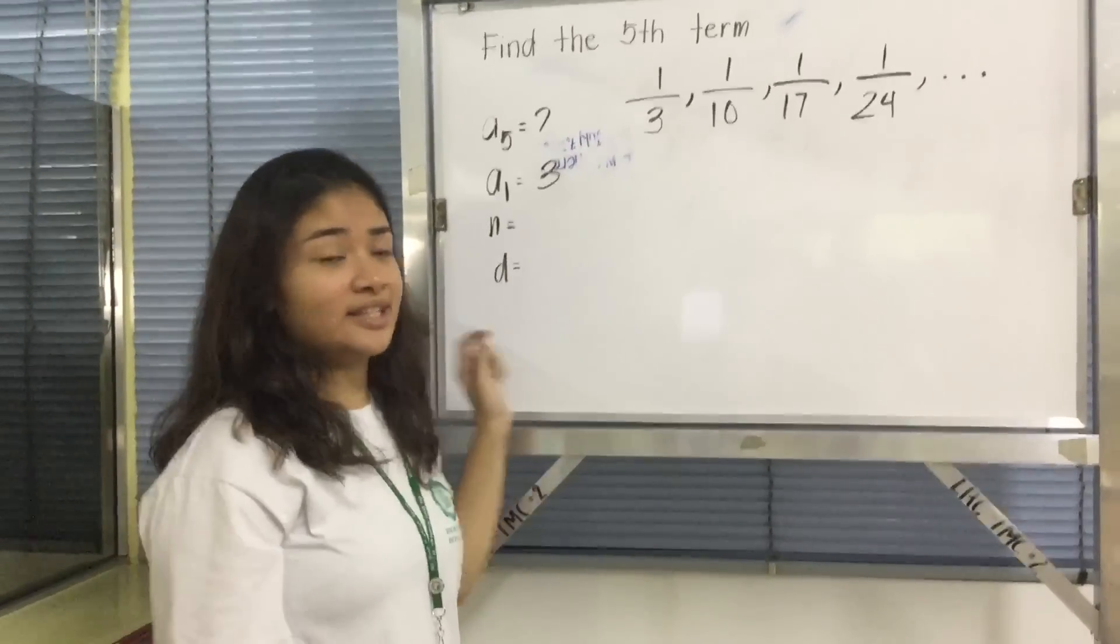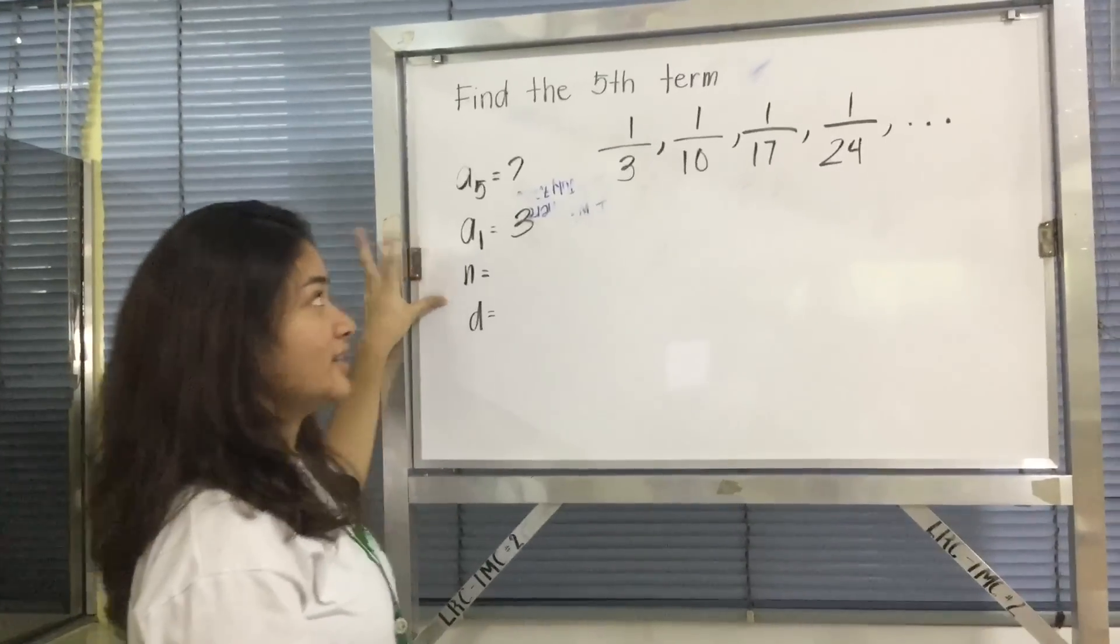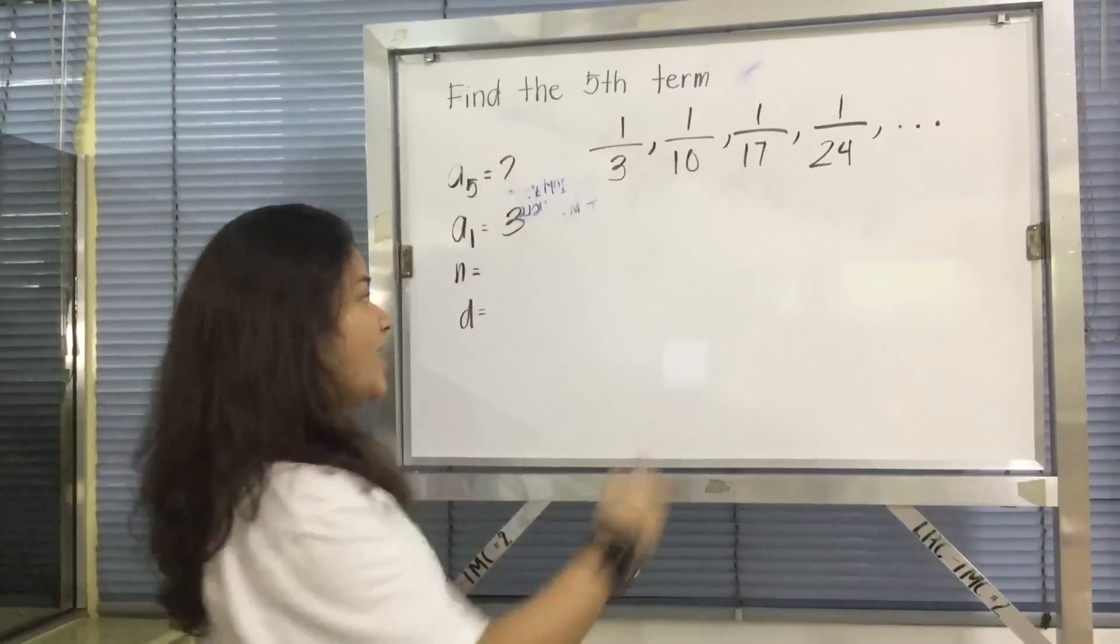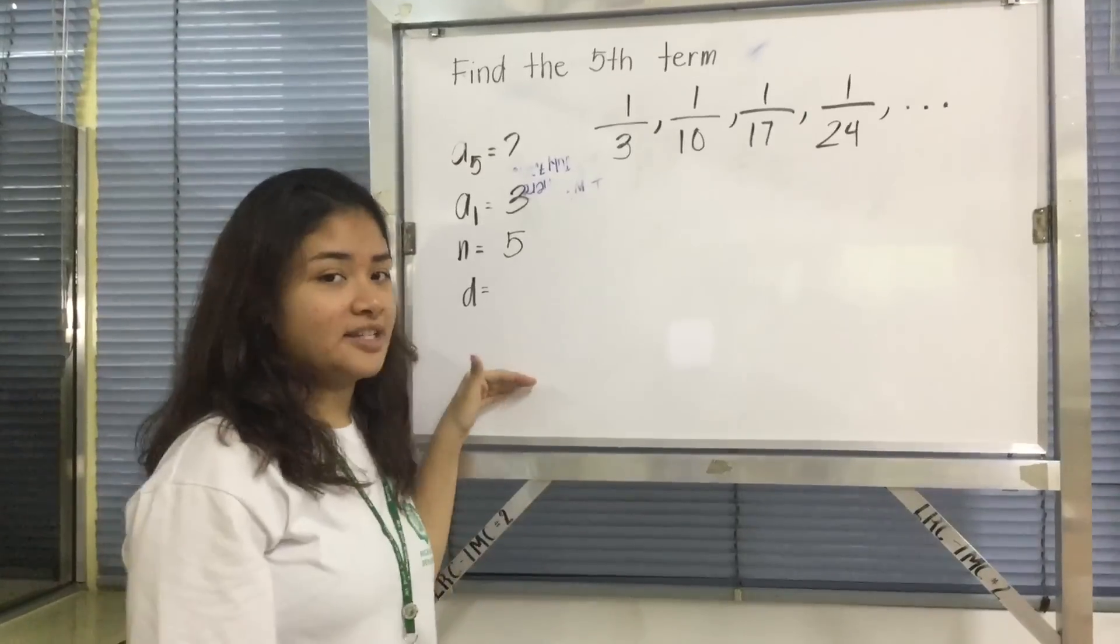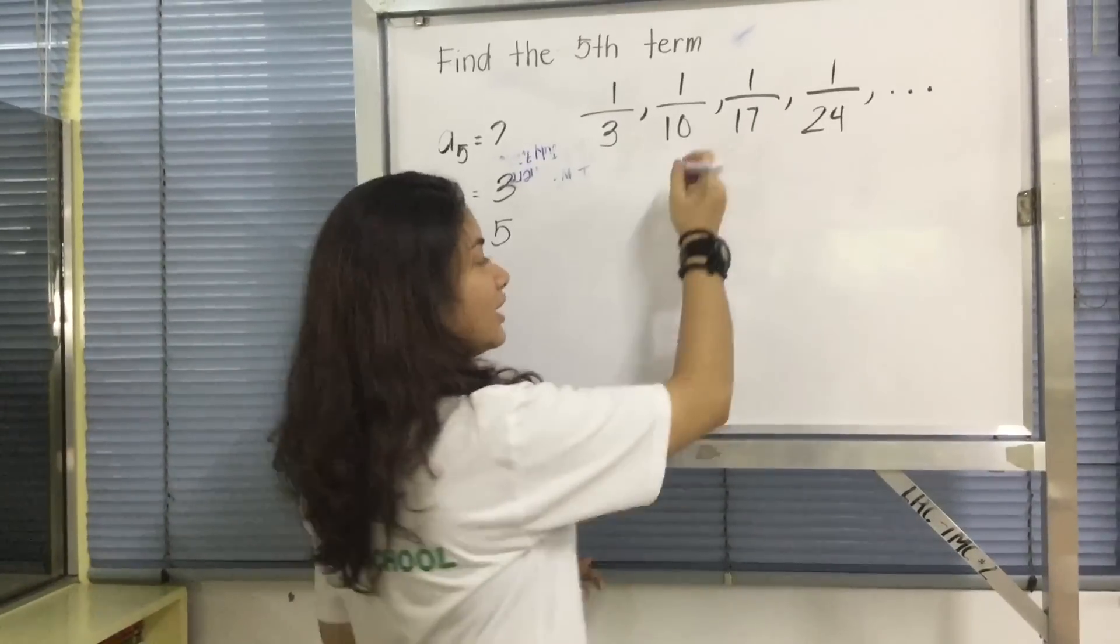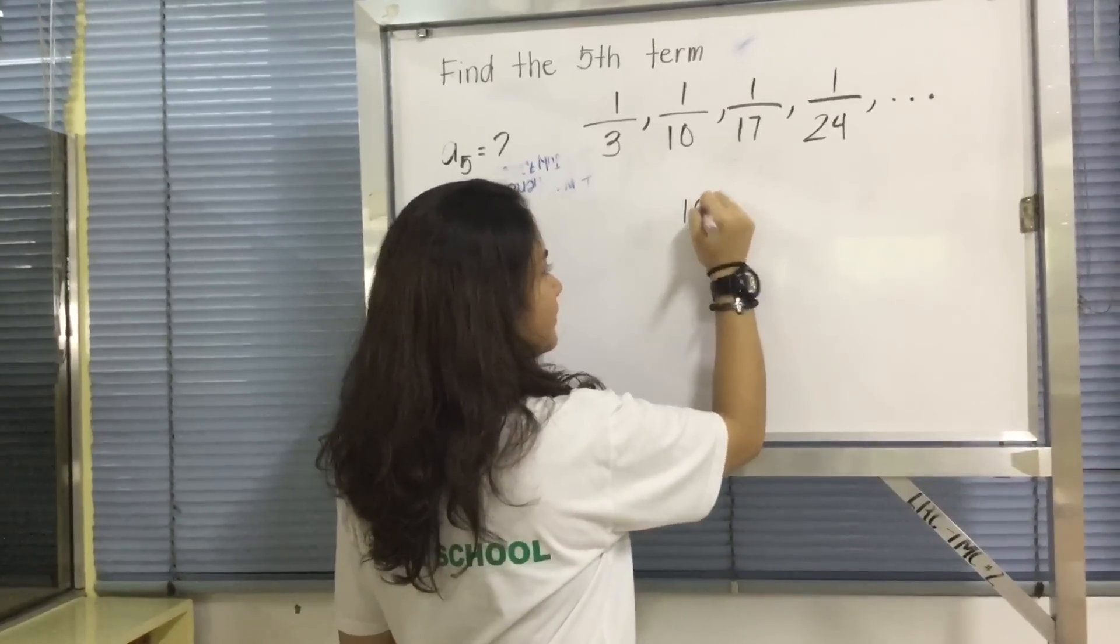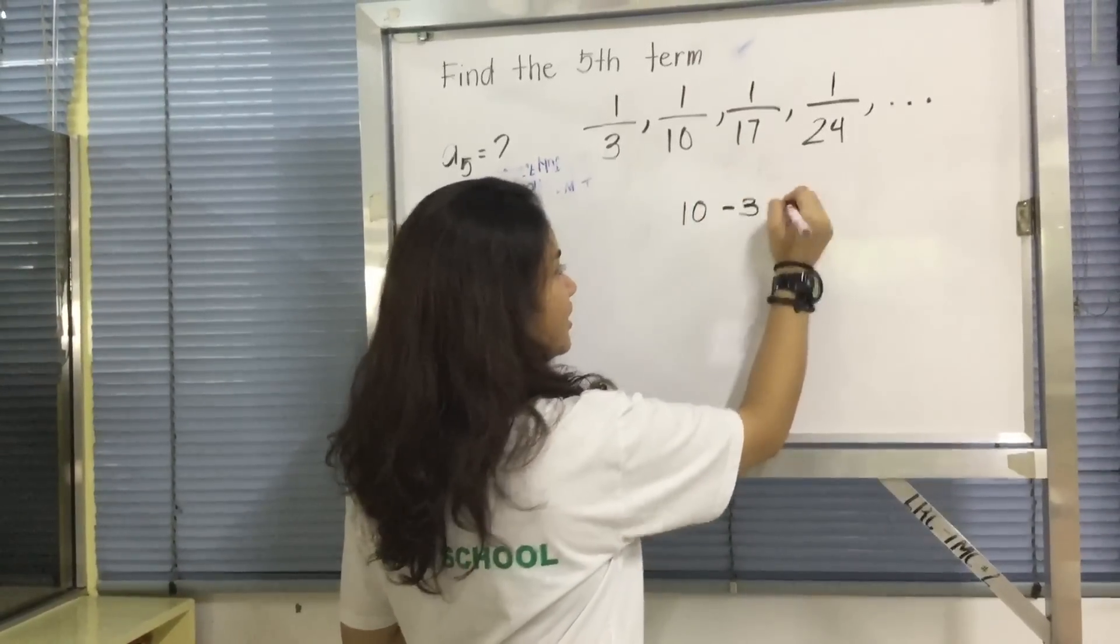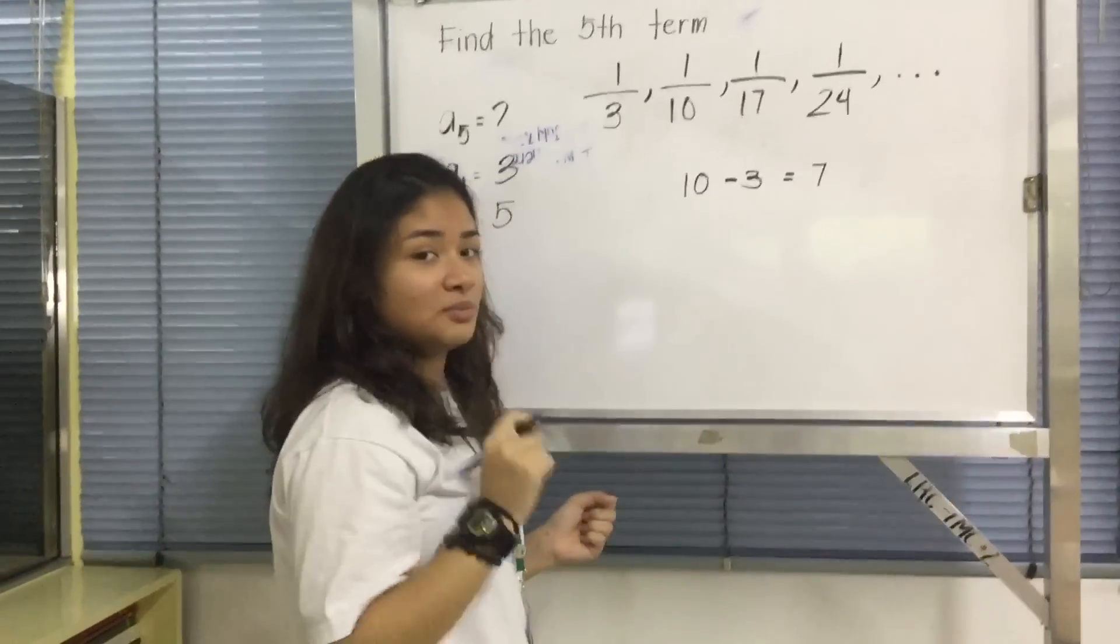Next, we get the nth term. The nth term is the term we're looking for, and that is the fifth term, so we write 5. Next is the difference. How will you get the difference? To get the difference, you subtract a2 from a1. So 10 minus 3 equals 7. So 7 is going to be your d.